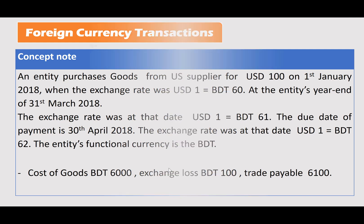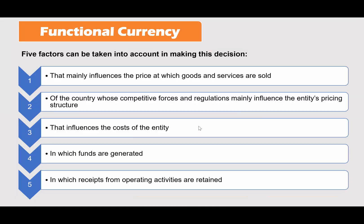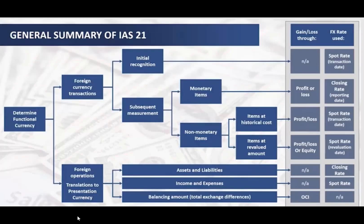Now I will explain the solution. Initial recognition is always at the spot rate on the day the transaction occurs. The subsequent measurement applies to monetary items such as accounts payable. The closing rate at the reporting date — March 31, 2018 — is used for monetary items, and the difference is recognised in profit and loss. Any exchange gain or loss from the subsequent measurement goes through profit and loss.